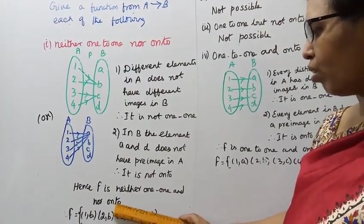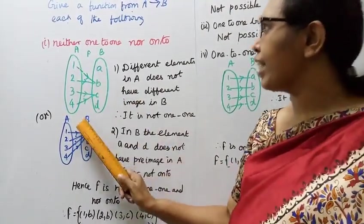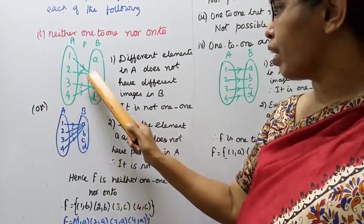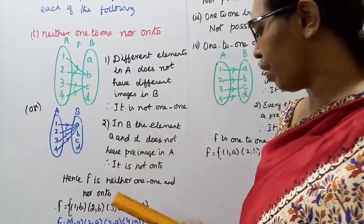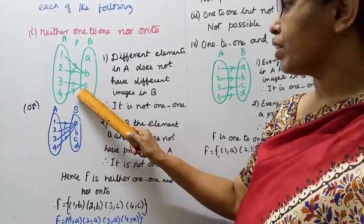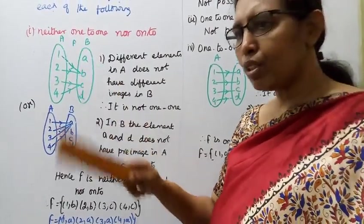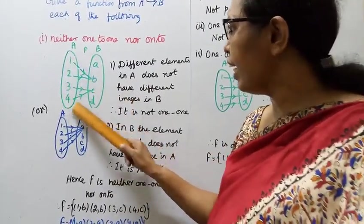So the function is f equals {(1,B), (2,B), (3,C), (4,C)}. This is a many-to-one function.